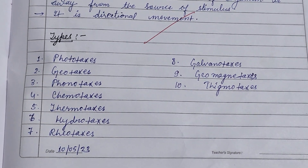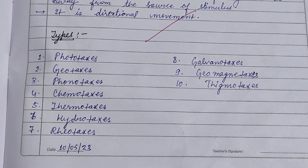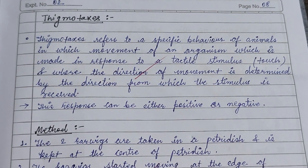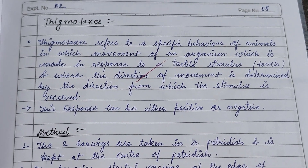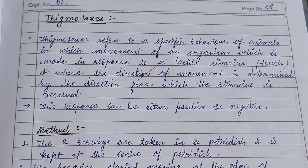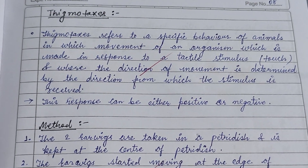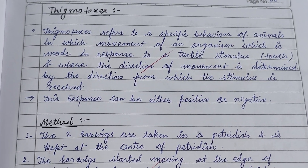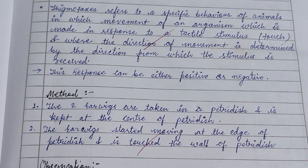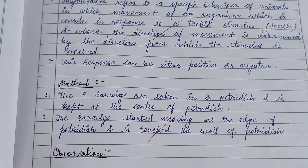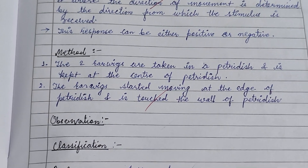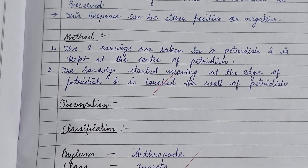In this video we will discuss thigmotaxis. Thigmotaxis means the orientation or movement of an organism made in response to a tactile stimulus. The stimulus is the touch receptor or touch material. The direction of movement is determined by the direction from which the stimulus is received, and this response can be either positive or negative.